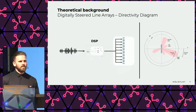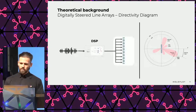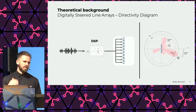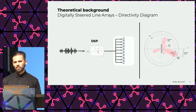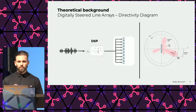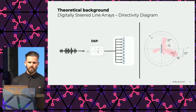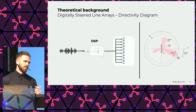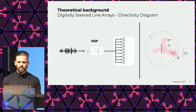As a result, the main lobe is formed to travel in the desired direction theta defined from the on-axis angle of the line array. Since we are changing the radiation pattern through controlled interference, this affects the complete directivity diagram. Not only is the main lobe steered into the desired direction, but also the artifacts — the grating lobes, the rear lobe, and the side lobes — are also causally steered depending on the steering angle.